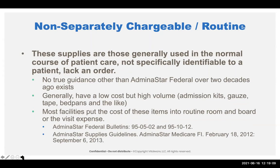Then we have routine items — this has always been a topic of great disparity. Supplies generally used in the normal course of patient care, not specifically identifiable to a specific patient, and they generally lack an order. Since there was no true guidance, everybody for two decades recalled the original Administrar Federal bulletin, before we had Medicare administrative contractors. These are generally low-cost, high-volume items like admission kits, gauze, tape, bedpans, gowns, gloves, and drapes. Most facilities put the cost of these items into routine room and board or the visit expense.